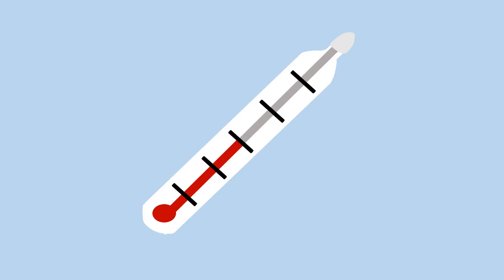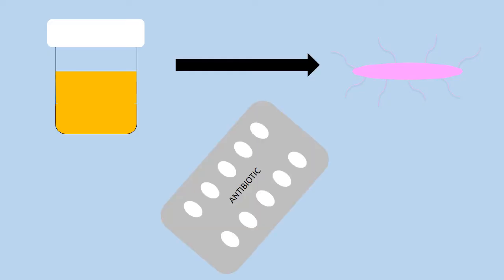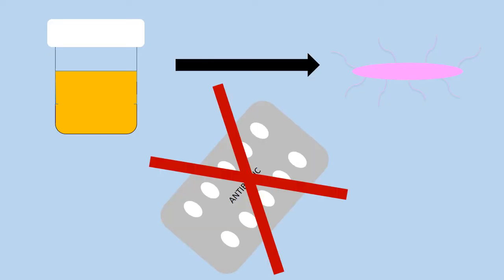Fever is not a common symptom for cystitis. Your doctor might indicate a urine culture, which is a test that identifies the bacteria that cause cystitis. It is very important not to take any antibiotics before the urine culture as this may lead to false negative results.